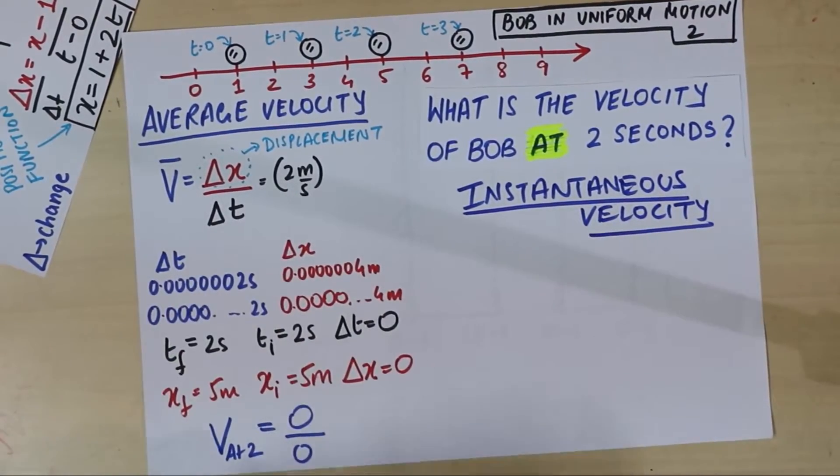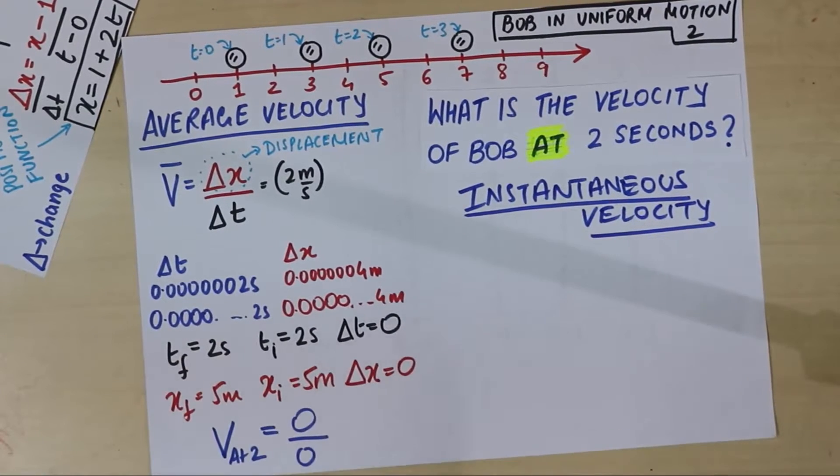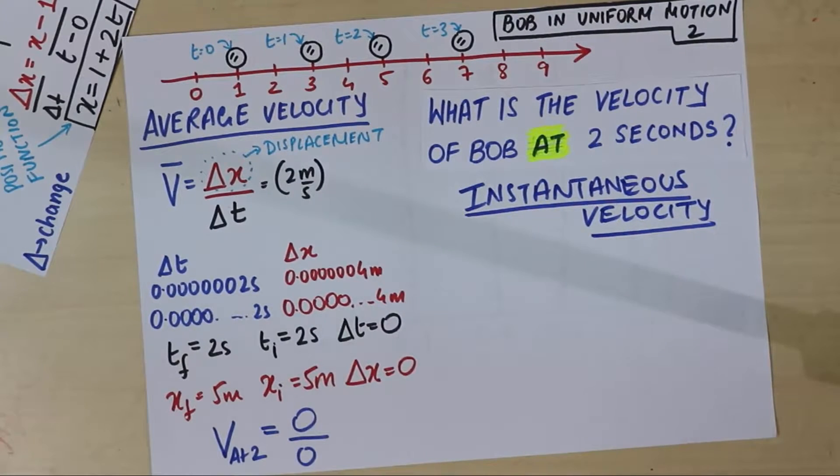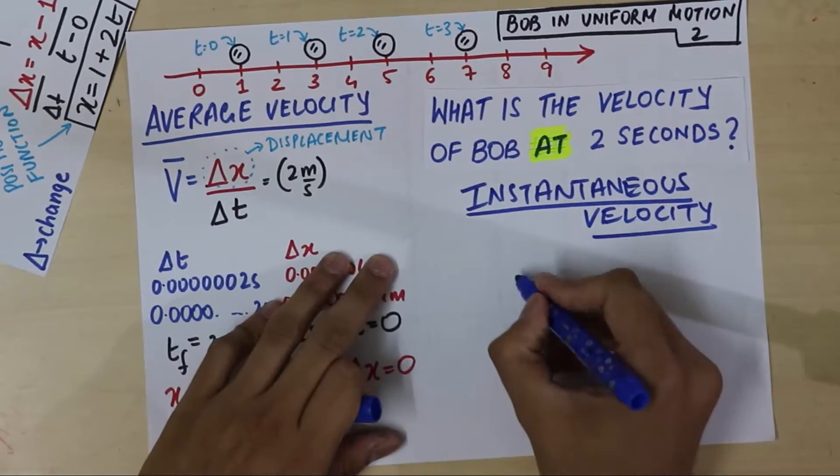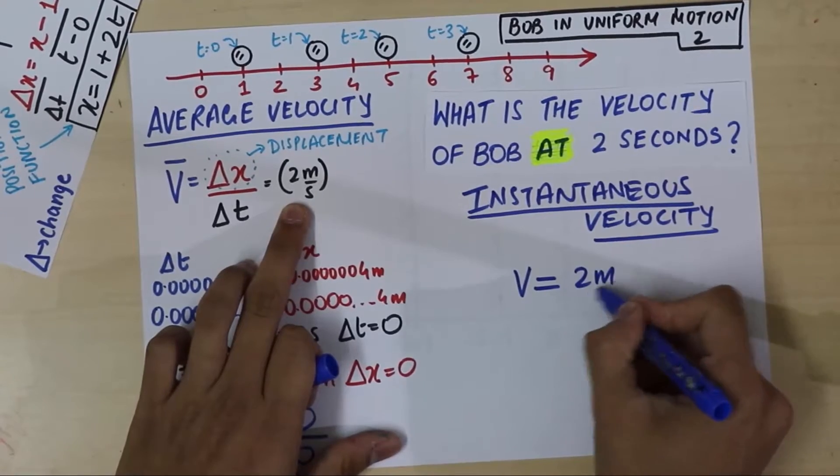And this velocity, we are going to call it as instantaneous, instantaneous velocity. And the name itself tells you, it's the velocity at a particular instant of time. And in our example, in our example, that answer, so I'm going to remove the bar now. No longer do we have a bar.